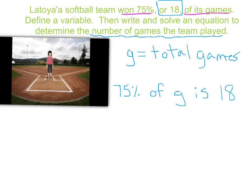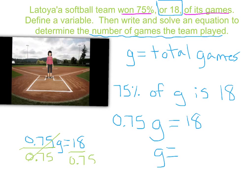75% — we have to write that as a decimal, which is 0.75. 'Of' means times, so times g, and 'is' means equals 18. So now we just solve it by dividing both sides by 0.75. When you divide 18 by 0.75, you get 24. So they played a total of 24 games, which means if they won 75% of 24, they should get 18.